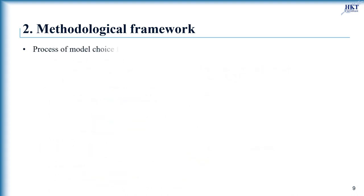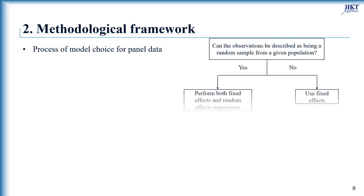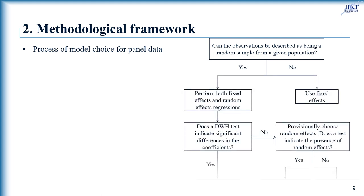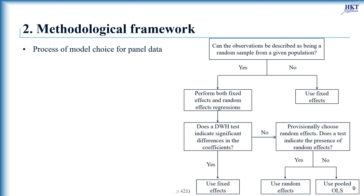For panel data, we must justify our model choice among pooled OLS, random effects, and fixed effects. The process of selecting the regression model is discussed in research by Doherty and Torres Reyna. The process begins with considering whether the observations are a random sample from a given population — that is, a subset of individuals randomly selected by researchers to represent an entire group as a whole.